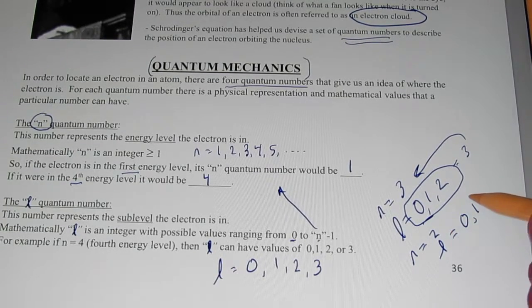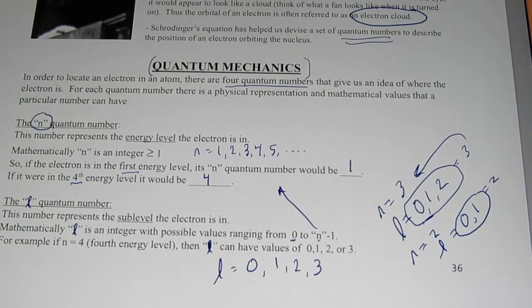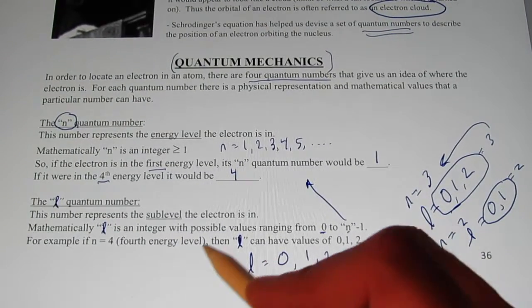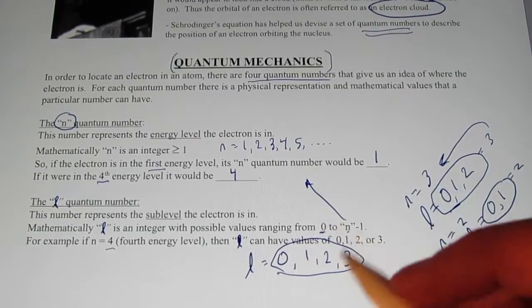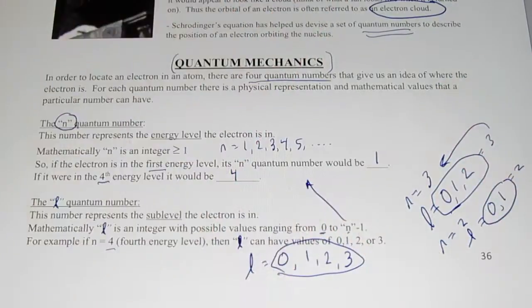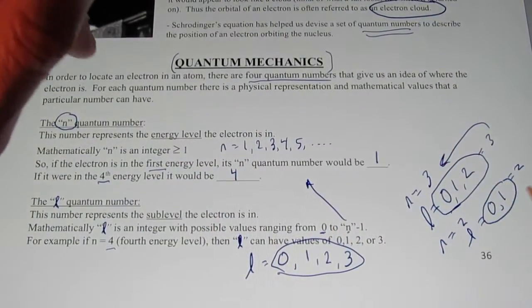When I was on the second energy level, weren't there two possible sublevels? And when I was on the fourth energy level, weren't there four possible sublevels? How many sublevels do you think are possible on the seventh energy level? If you said seven, very good.